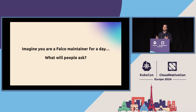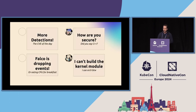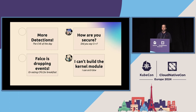So imagine if you were a Falco maintainer or contributor for a day, going around KubeCon. What are the questions that I and my fellow maintainers get? Of course, a lot of people want more detections, and that's really great — we want to detect more things. For example, there's a new CVE of the day and we want to be able to detect when that CVE is being exploited by a malicious actor.